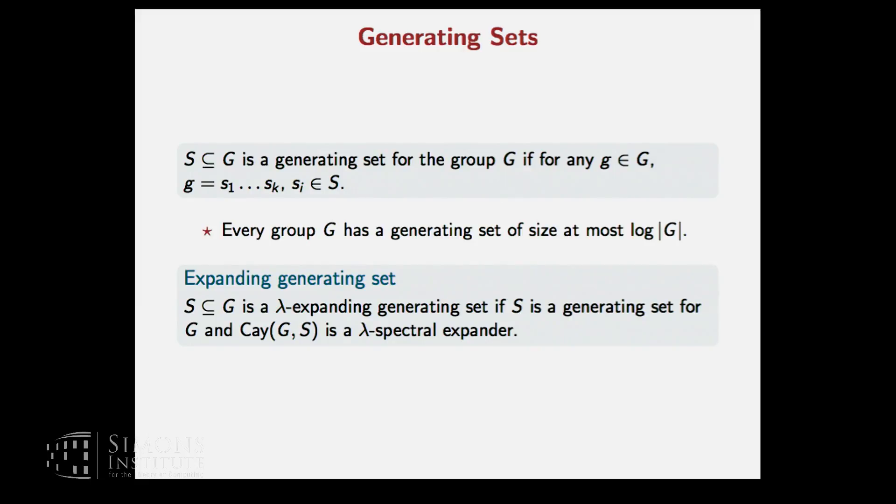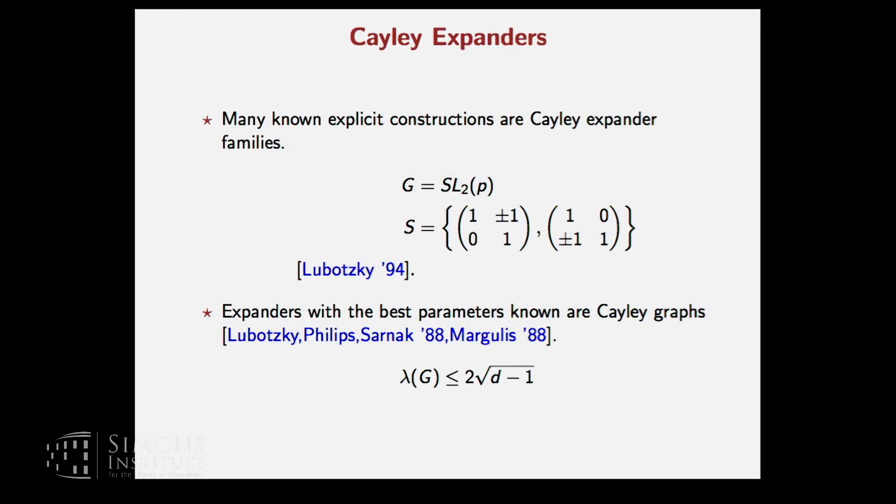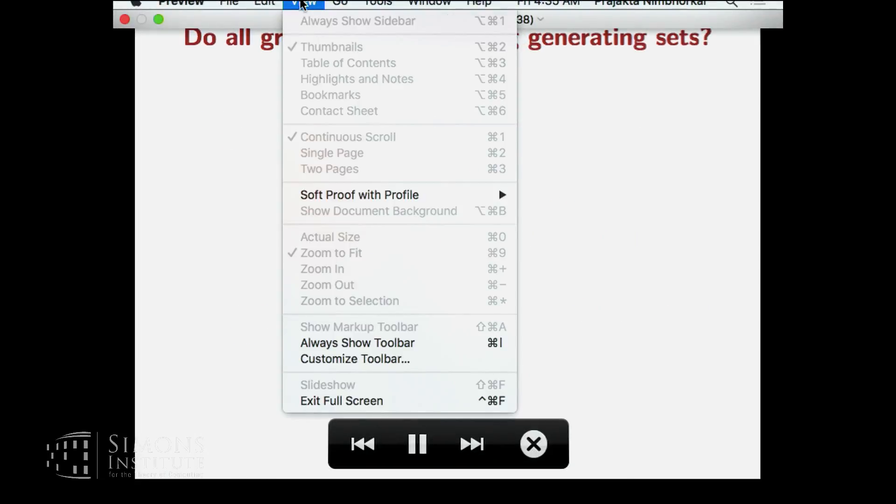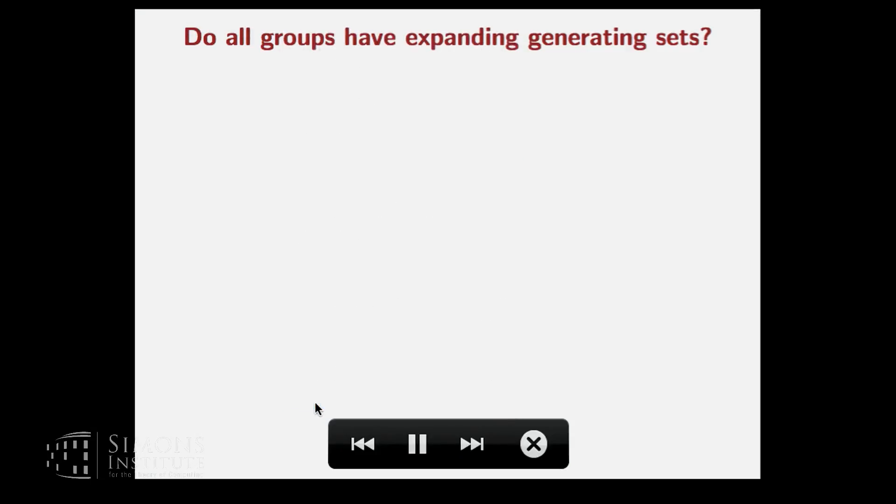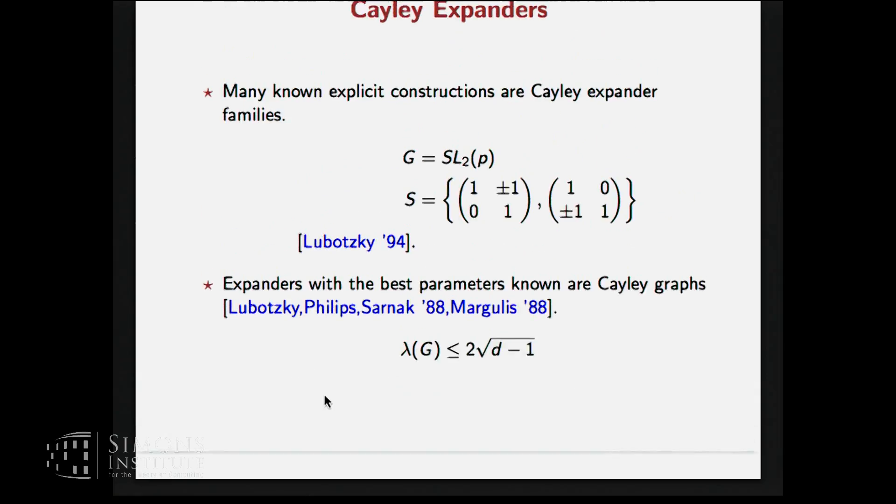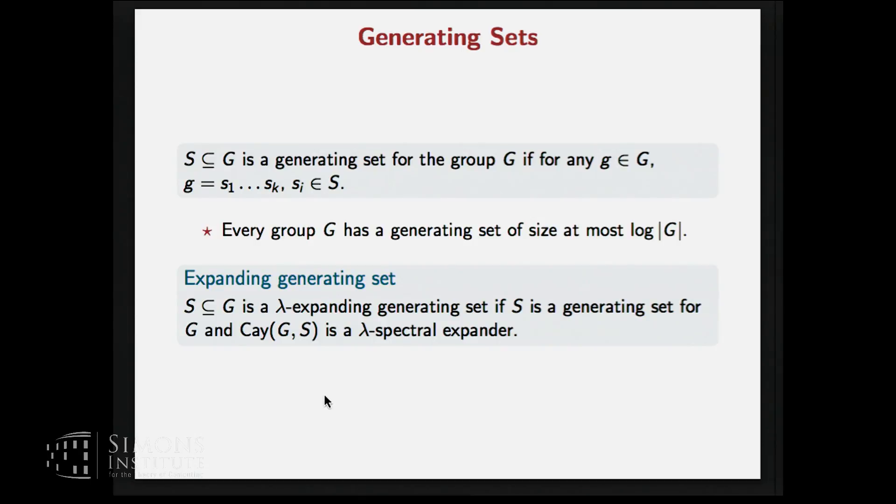And what we are interested in is getting an expanding generating set for the group. So what we are interested in is getting a generating set S for group which leads to an expanding Cayley graph. And in particular, we say a generating set is lambda expanding if the corresponding Cayley graph has a spectral expansion of lambda.